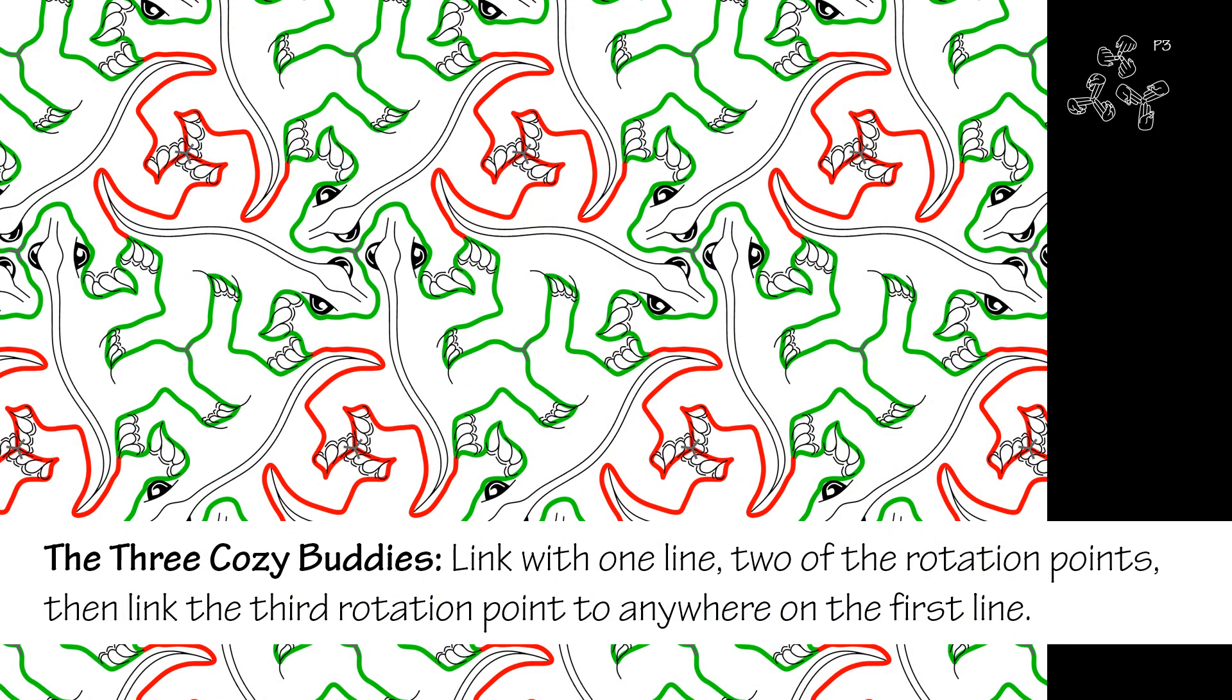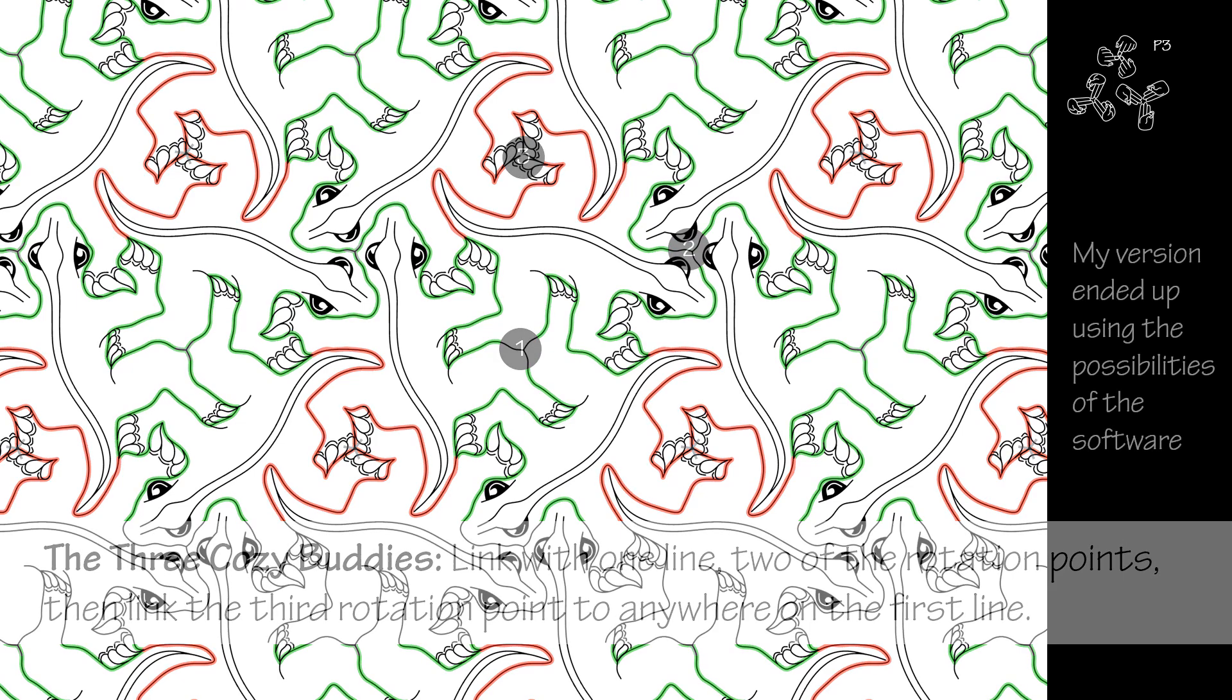Here, I've highlighted the two major lines that outline the tile. It follows the same rule for the three Cozy Buddies: Link with one line, two of the rotation points, then link the third rotation point to anywhere on the first line.